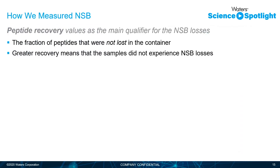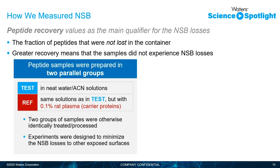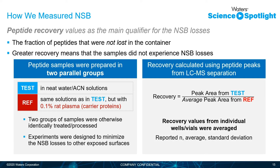We used peptide recovery as the main qualifier to evaluate nonspecific binding losses, where greater recovery values indicate the sample did not experience losses. Peptide samples were prepared in two parallel groups: the test group in neat water/acetonitrile solutions, and the reference group in the same solution but with 0.1% rat plasma to act as a carrier protein and protect against nonspecific binding losses. Recovery was calculated by dividing the peak area from the test group by the average peak area from the reference group.